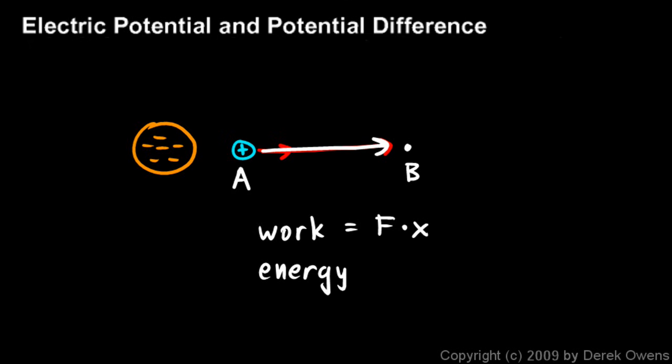The energy that we had to expend to push that particle from A to B, where did it go? We know that it didn't simply disappear because energy is conserved. You remember the law of conservation of energy. Energy is not created or destroyed. Where did the energy go? The energy that we used up, pushing it from A to B, where did it go?